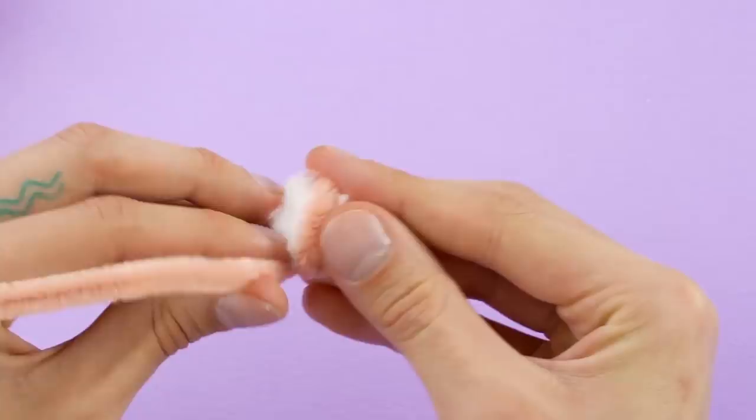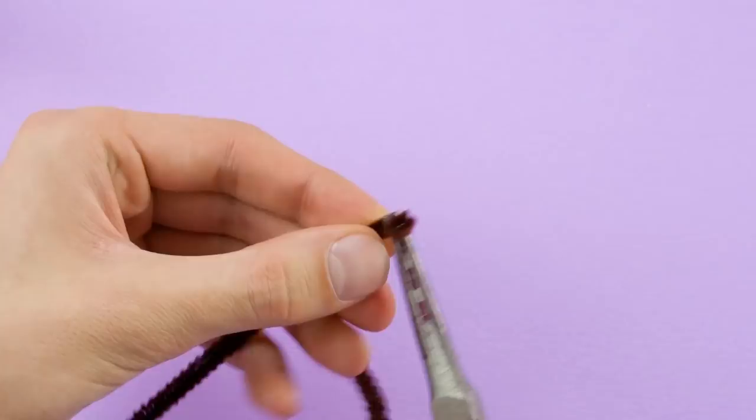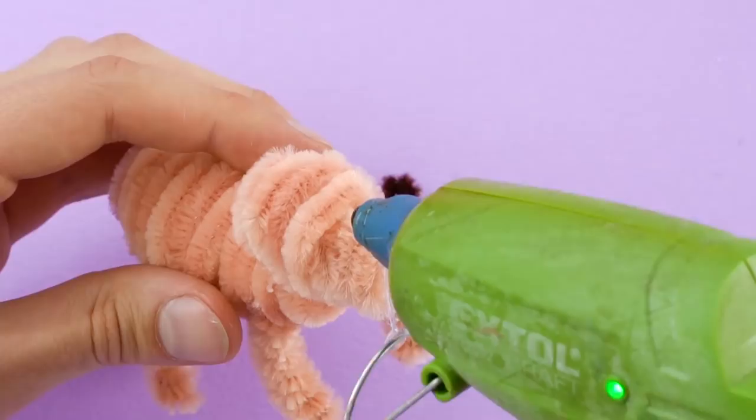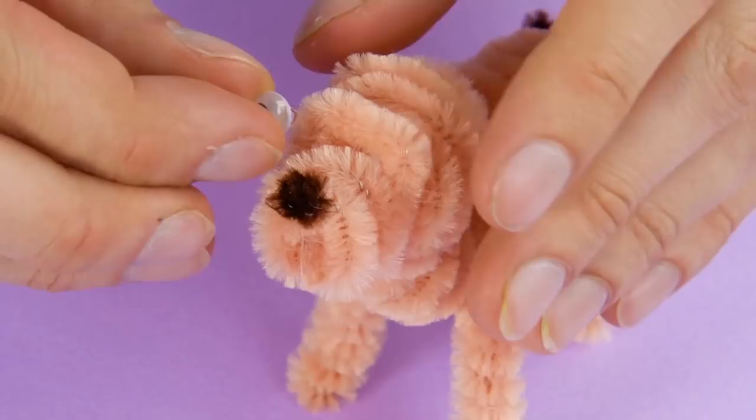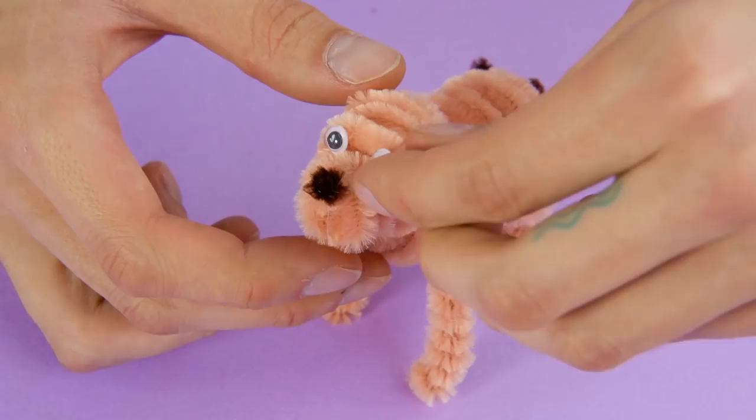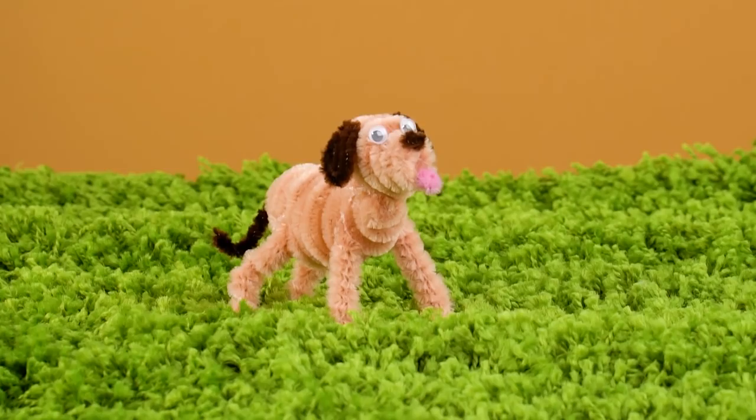Let's give this pooch a head. Wrap the pipe cleaner around a smaller cotton ball. Then glue the head to the body. Cut a small piece of brown pipe cleaner and glue it on as the nose. Use a longer piece for the tail. Add some googly eyes and bend out some sloppy ears. A pink pipe cleaner works great for a tongue. Barbie's canine companion is ready to go to the dog park.